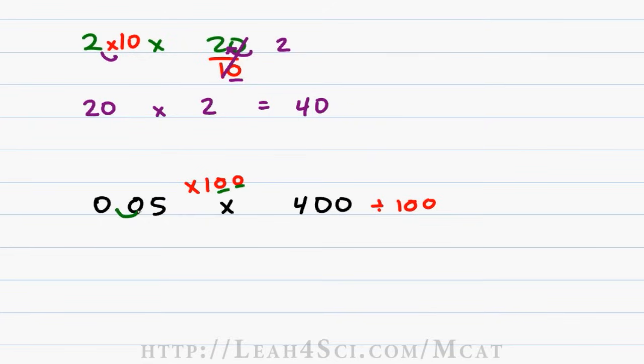0.05 times 100, 100 has 2 zeros so I move the decimal 2 spaces to the right giving me 5. Look at 400 divided by 100. 100 has 2 zeros and because we're dividing we move the decimal 2 spaces to the left. That gives me 4.